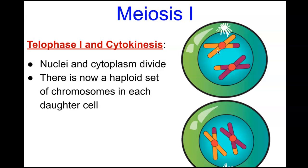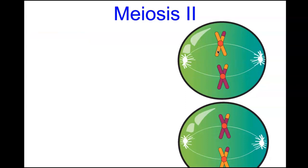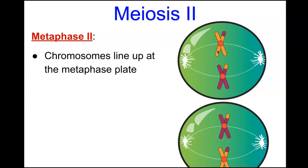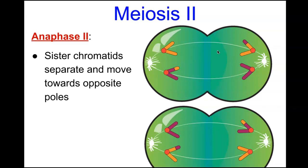Now we enter meiosis II. In prophase II there is no crossing over — that only happens during prophase I. Spindle fibers form. In metaphase II, chromosomes line up at the metaphase plate. Because of crossing over in meiosis I, the chromatids are now unique from one another.